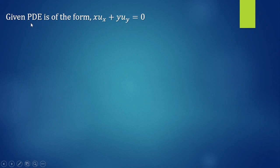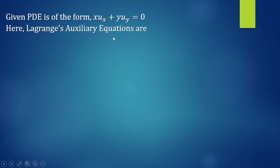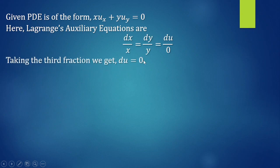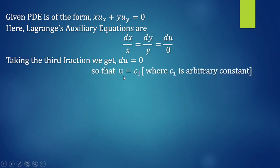The given partial differential equation is XUx plus YUy equals 0. We write Lagrange's auxiliary equations as: dX/X equals dY/Y equals dU/0. Taking the third fraction, we get dU equals 0, and integrating we get U equals C1, where C1 is an arbitrary constant.